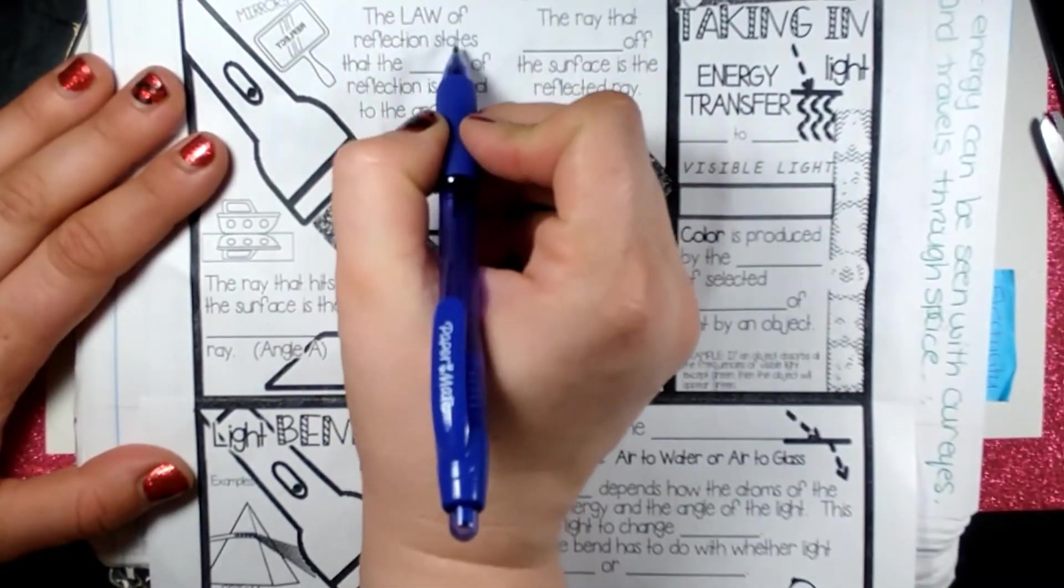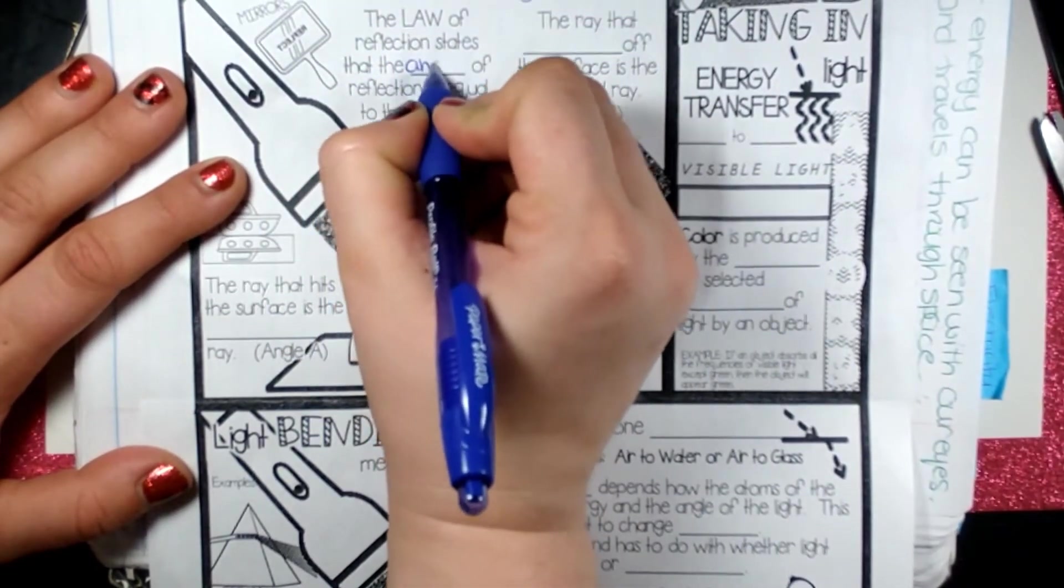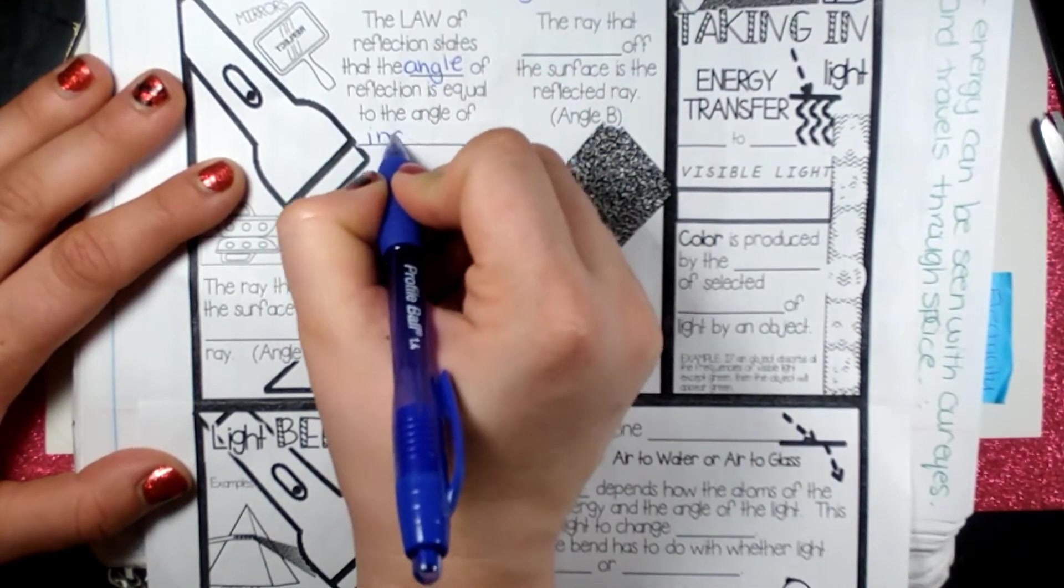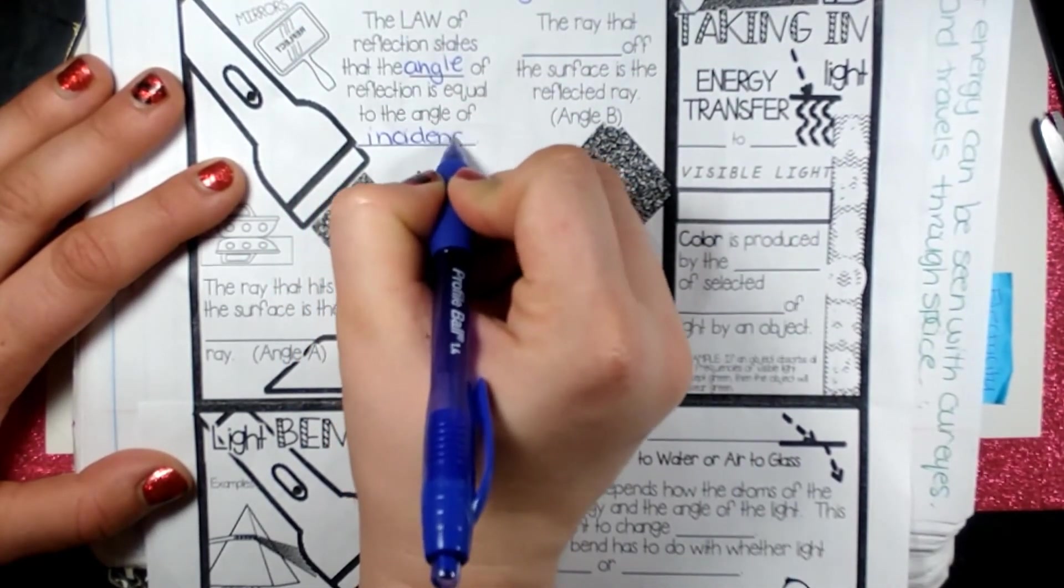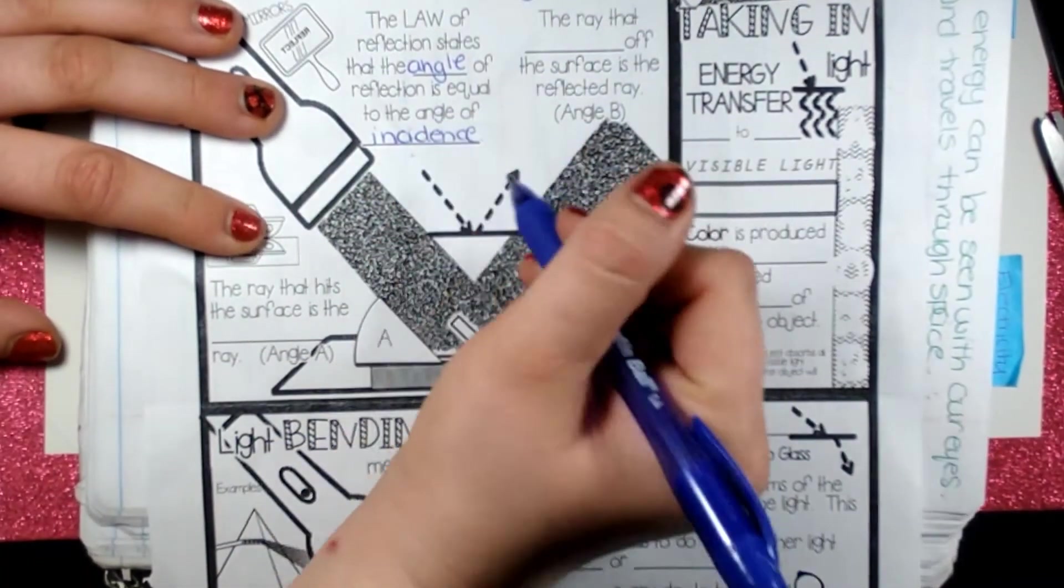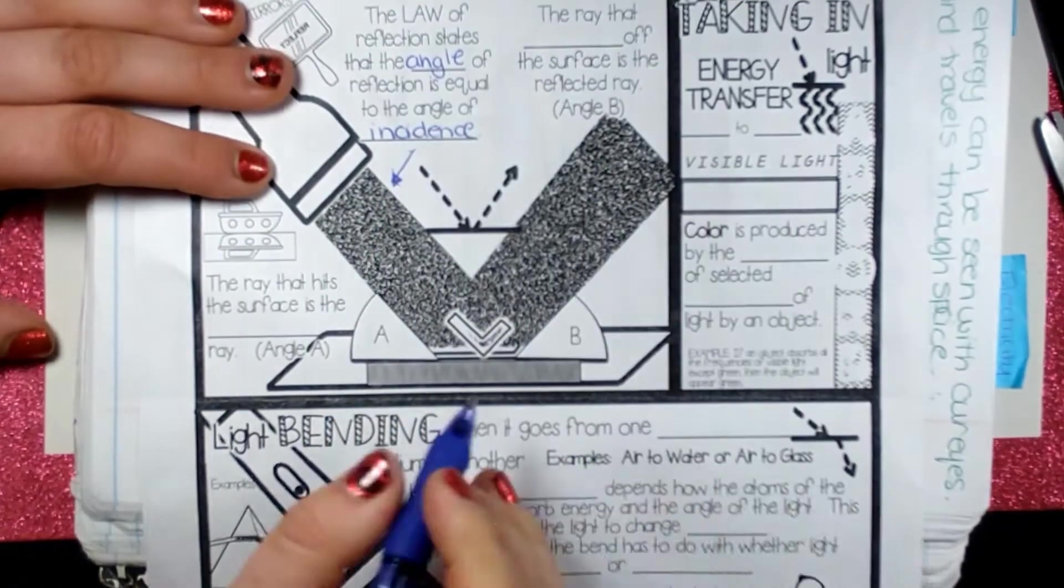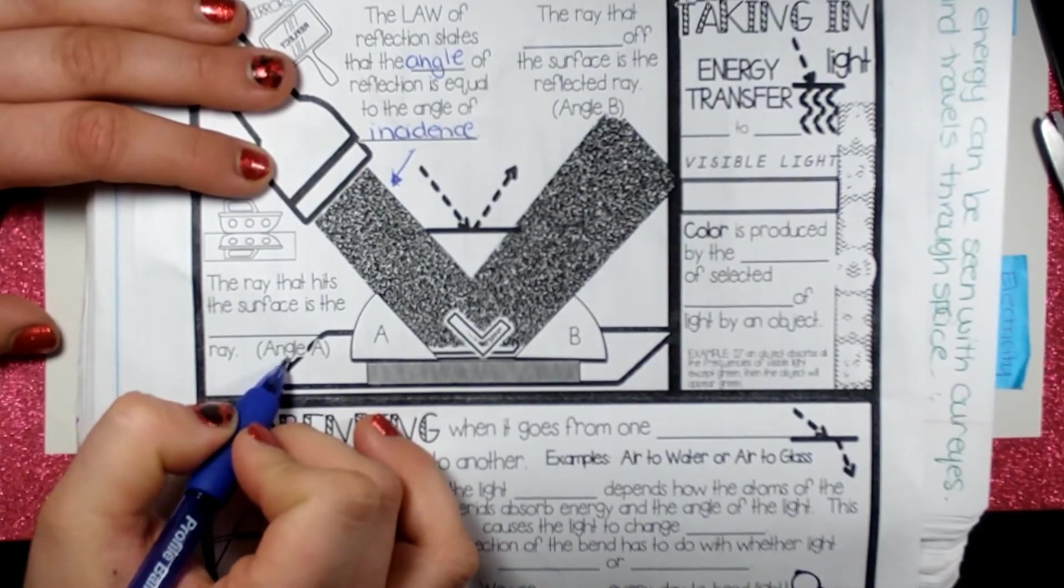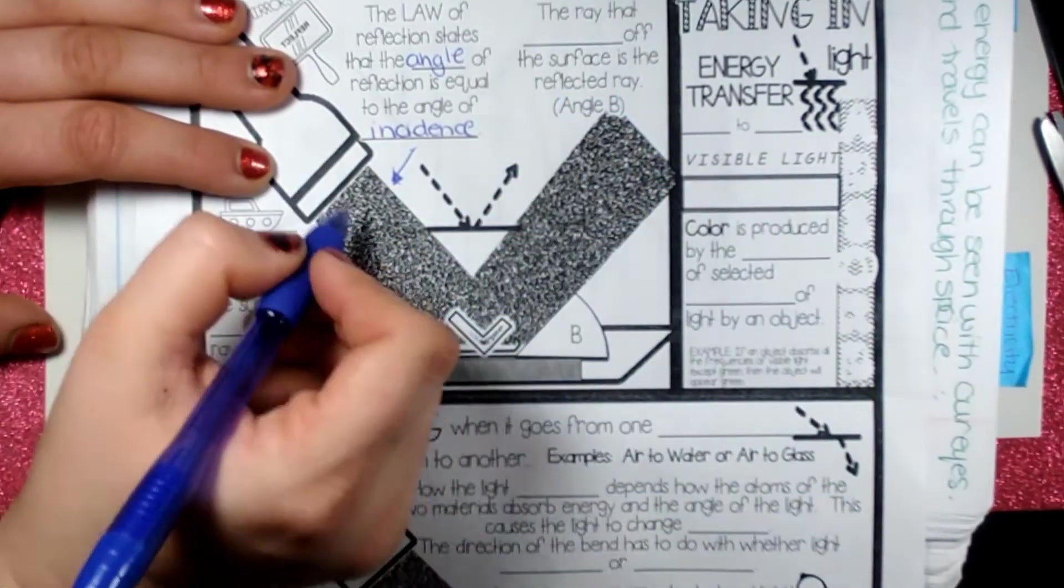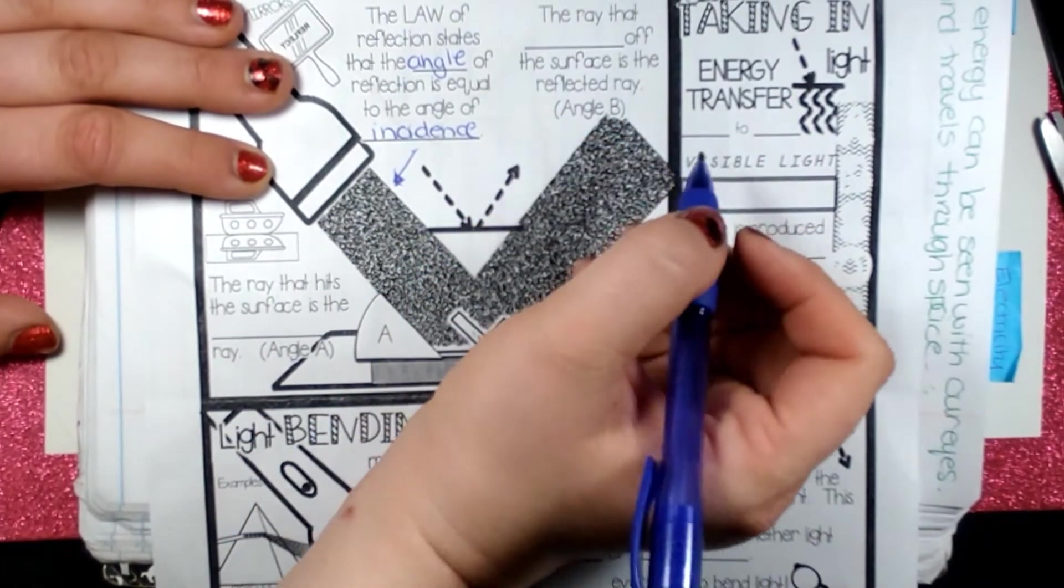The law of reflection states that the angle of the reflection is equal to the angle of incidence. So in other words, the angle of incidence, which is right here, angle A, if it's going to bounce off and be the same angle as the reflection, which is B.